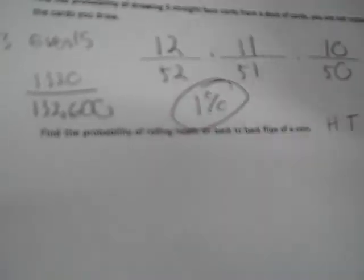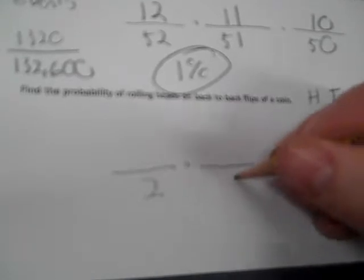Find the probability of rolling heads on back-to-back flips of a coin. Now a coin has heads, it has tails. So we're doing back-to-back means there's two events. There's two possibilities, but there's only one heads. Okay, so that's 1 and that's 4. I would hope most of you know the percent for that. It's 25%.